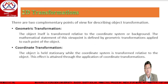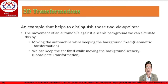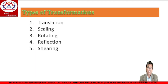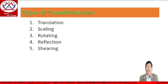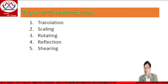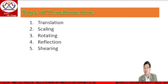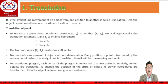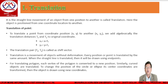Then we go to the transformation types. I am showing the types of geometric transformation. We can also discuss the types of coordinate transformation in later videos. The transformation types include translation, scaling, rotation, reflection, and shearing transformation.